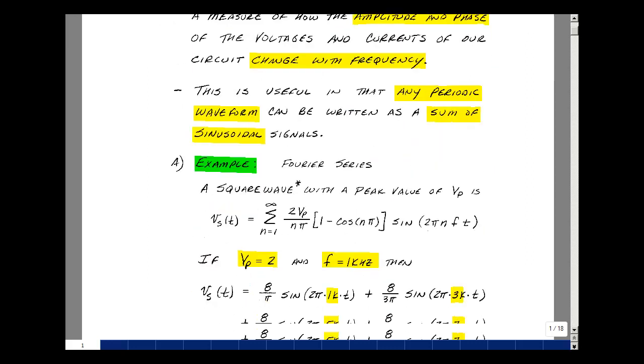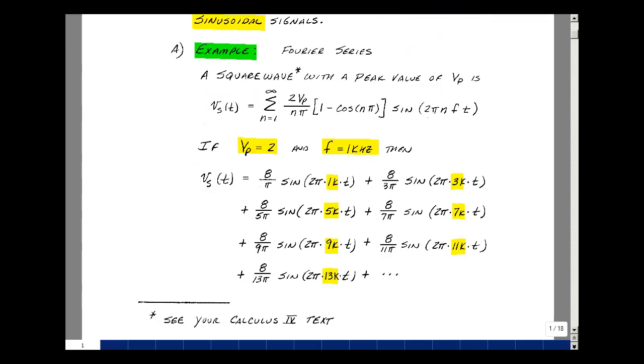For example, the Fourier series of a square wave is the following formula, and you can find this formula in your calculus book. It's a summation from n equals 1 to infinity of 2V_p over nπ, where V_p is the peak value of the square wave, times the quantity (1 - cos(nπ)), times sin(2πnft).